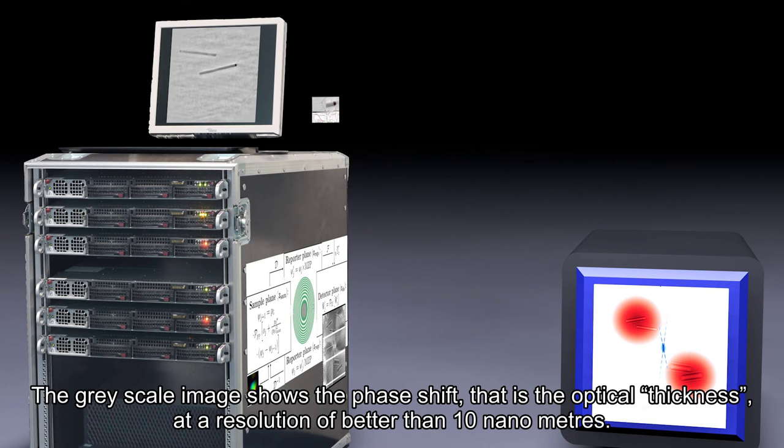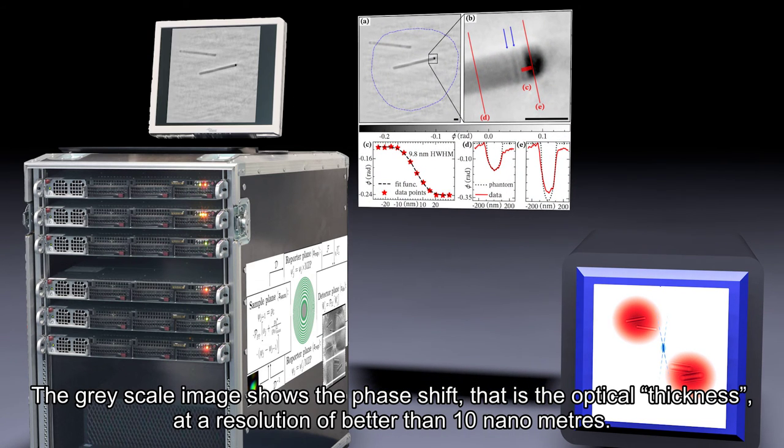Now the algorithm produces a sharp image of the two nanowires. The grayscale image shows the phase shift, that is the optical thickness, at a resolution of better than 10 nanometers.